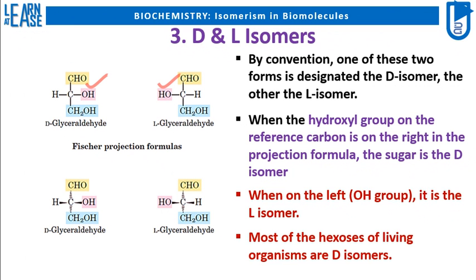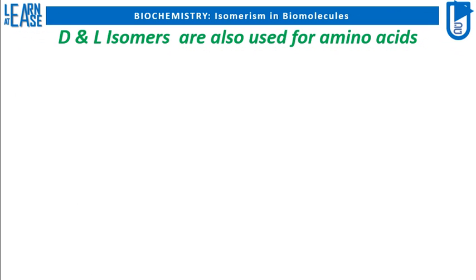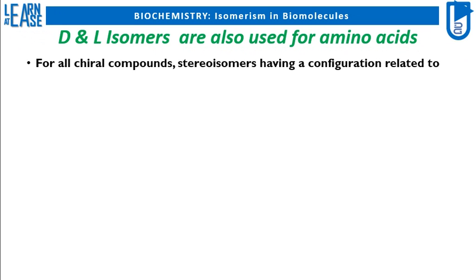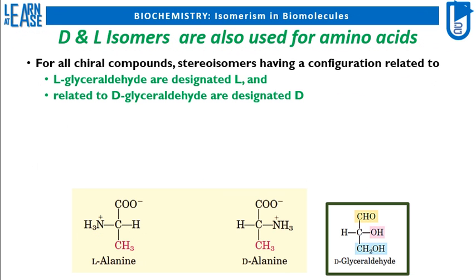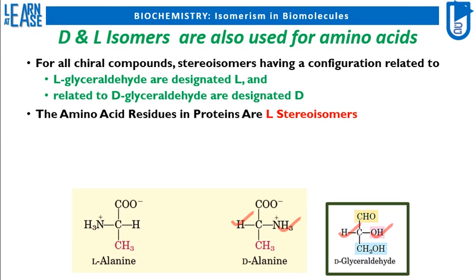Most of the hexose sugars of living organisms are D isomers. It is to be remembered that D and L designation is not only used for carbohydrates, but also for amino acids. For all chiral compounds, stereoisomers having a configuration related to L-glyceraldehyde are designated L, and those related to D-glyceraldehyde are designated D. Similar to carbohydrates where the arrangement of OH group was seen, in amino acids the arrangement of the NH3 amino group is used for providing D or L designation to the molecule. The amino acid residues in proteins are L stereoisomers.